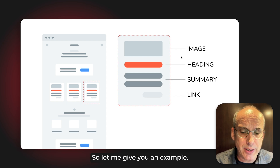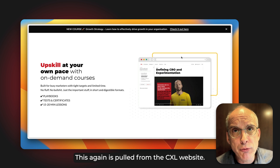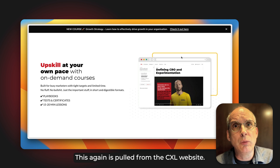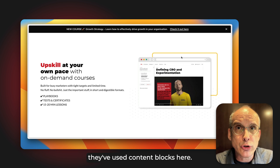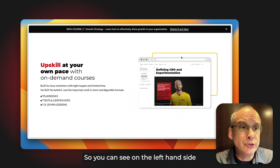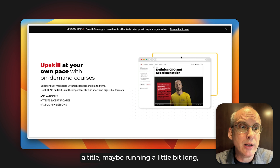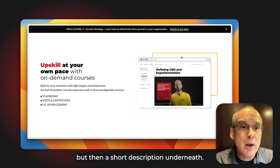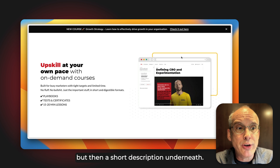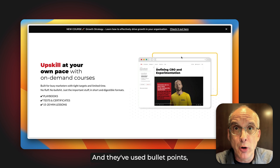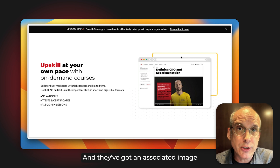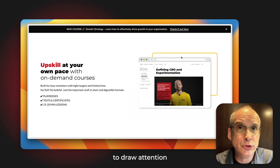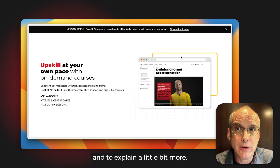Let me give you an example — again pulled from the CXL website. As you can see, they've used content blocks here. On the left-hand side there's a title, running a little bit long, but then a short description underneath. They've used bullet points, which is an excellent decision, and they've got an associated image to draw attention and explain a little bit more.